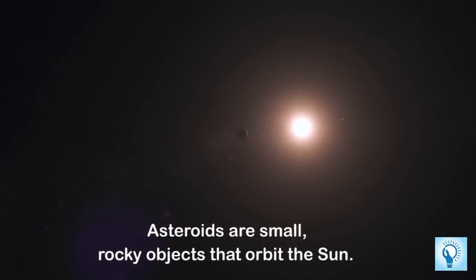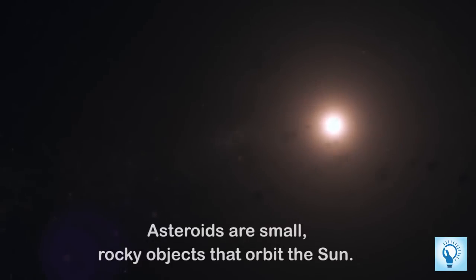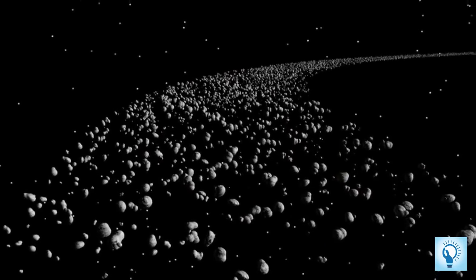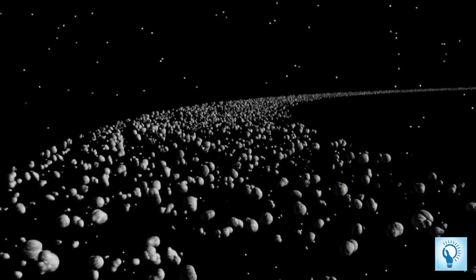Asteroids are small rocky objects that orbit around the sun and while they do orbit around the sun much like planets, they are much smaller than them.